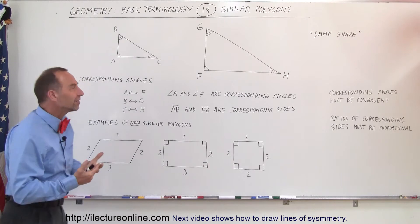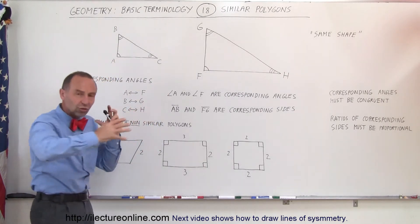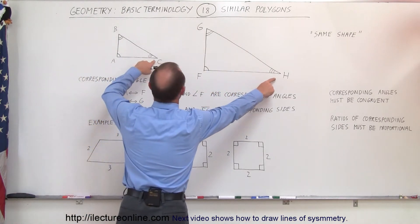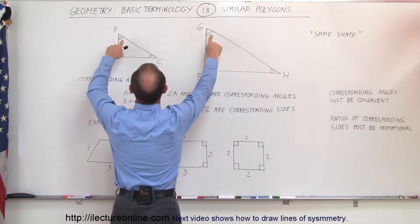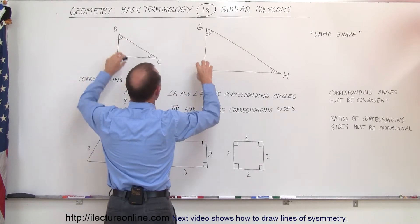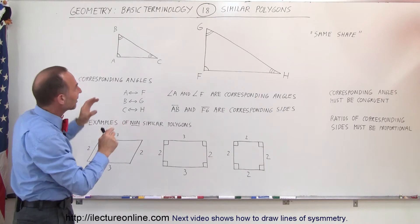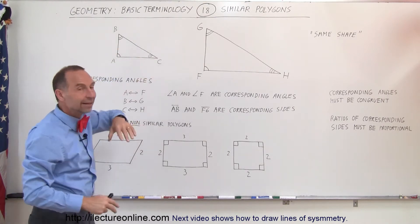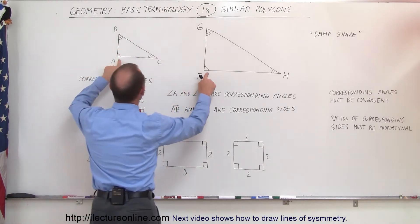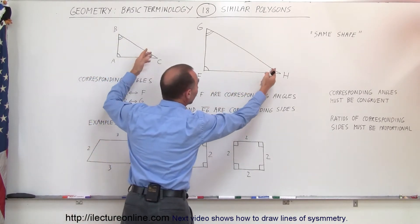So what are corresponding sides and corresponding angles? Here we have two triangles situated in the same way: they have the small angle to the right, the larger angle to the upper left, and something that looks close to a right angle in the bottom left corner. You can see that the angles appear to be the same — this angle appears to be the same as this one, this angle as this one, and this angle as that one.